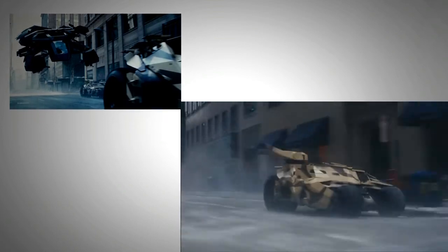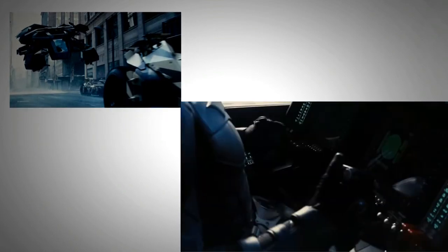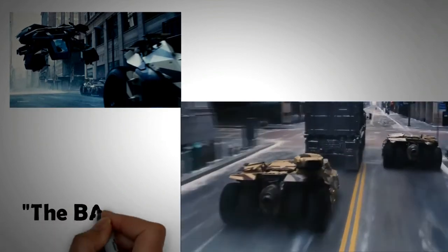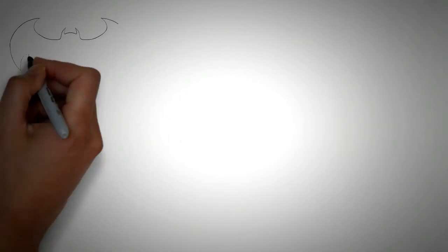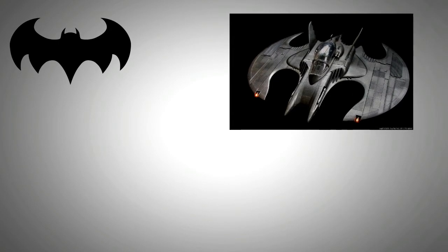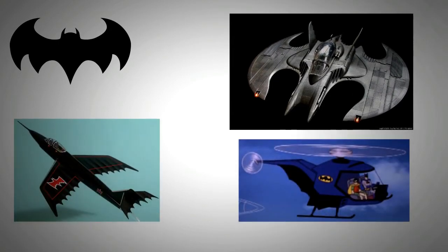Many of you would be fascinated by the aircraft, the Bat, that featured in the movie Dark Knight Rises. There have been other types of aircraft used by the Caped Crusaders, like the Batplane in Justice League movie, while Batwing and Batcopter have featured in the comics.